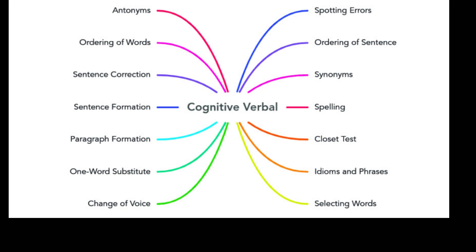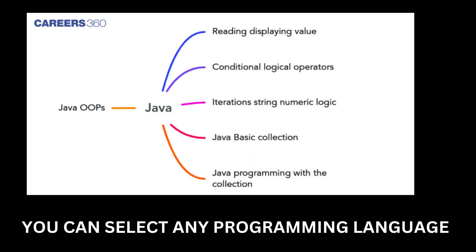For the coding section, whichever programming language you select, you need to learn OOPs concepts, arrays, strings, operators, and basic collections. If you're taking Java, learning Java programming with collections will help you write code faster. These are the key topics for the programming section.